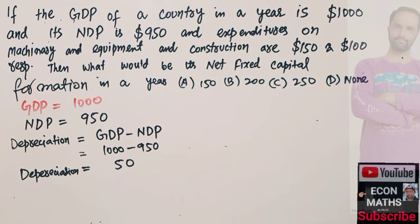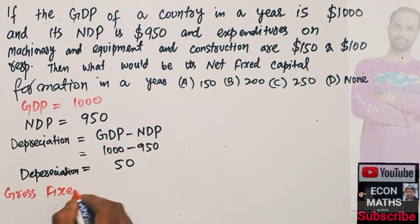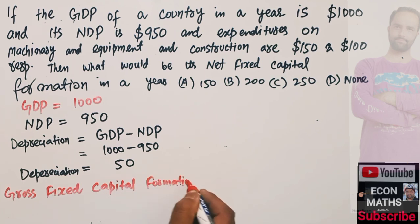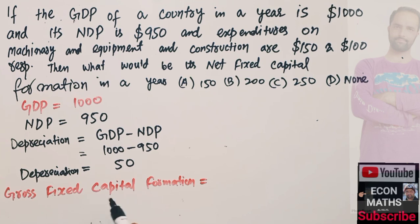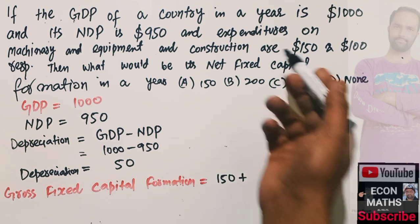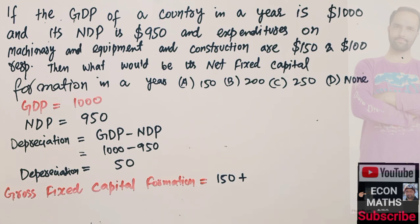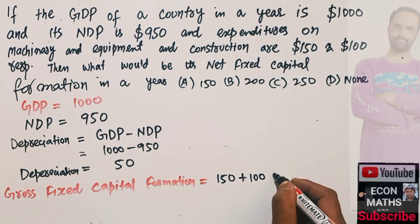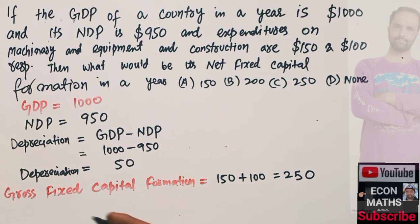Next, we need to find out the gross fixed capital formation. This is simply the expenditures on machinery and equipment — $150 — plus the expenditures on construction, which also account for an increase in assets — $100. So our gross fixed capital formation comes out to be $250.